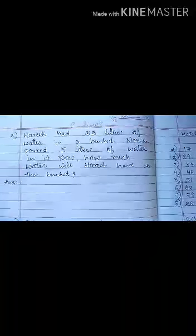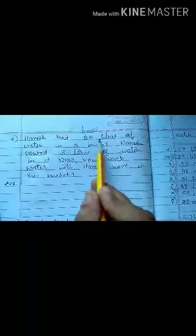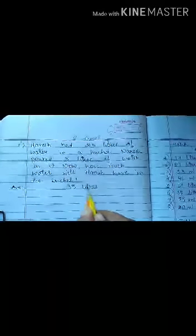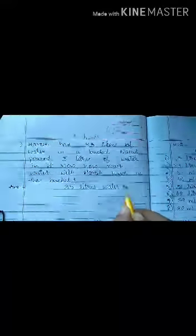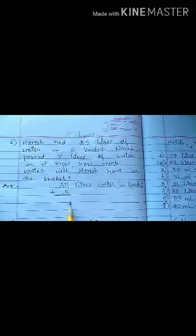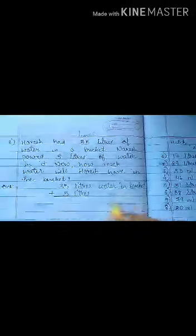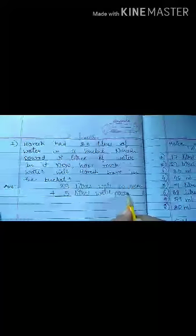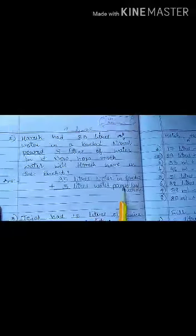It's very simple. What you have to do is, what you have to write first? How much water will be in the bucket? Liters of water in the bucket. You have to write it word by word. 35 liters of water in a bucket before, plus 5 liters of water added by Harish.